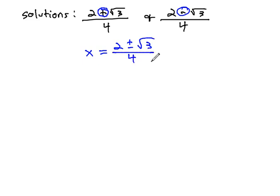Now, one thing that might make this difficult to work with is the fact that we have a fraction. Well, we can quickly clear a fraction by multiplying both sides by the LCD, in this case multiplying by 4, so that they can divide out of the right side. This gives us 4x equals 2 plus or minus the square root of 3.